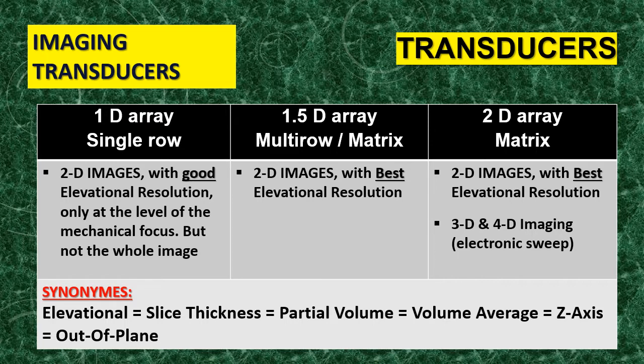The 2D array transducer is also suitable for 3D and 4D imaging through electronic sweeping, which will be covered in the next lecture. To summarize the synonyms for elevation resolution: slice thickness, sectional thickness, partial volume, volume averaging, z-axis, and out-of-plane — all refer to the same concept: elevational resolution. Thank you, and see you in the next lecture on 3D and 4D imaging.